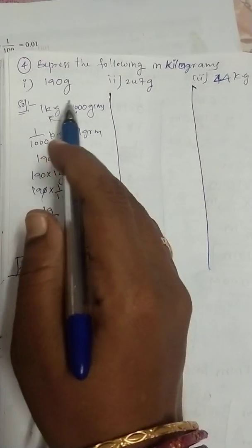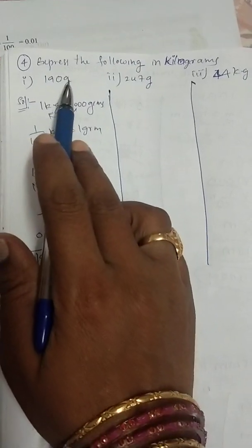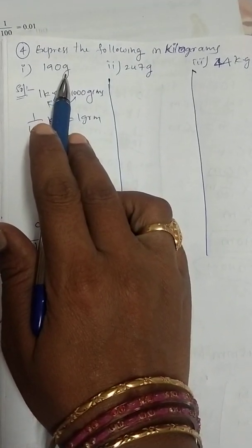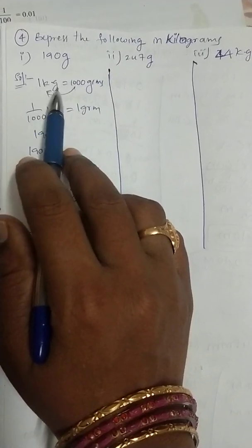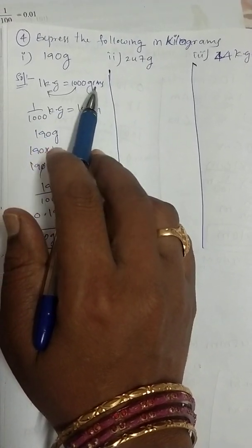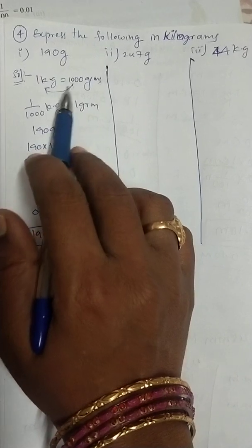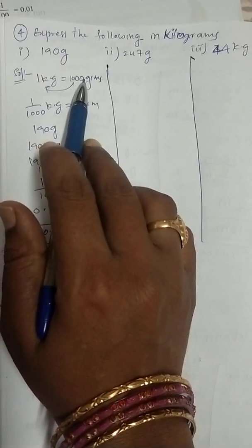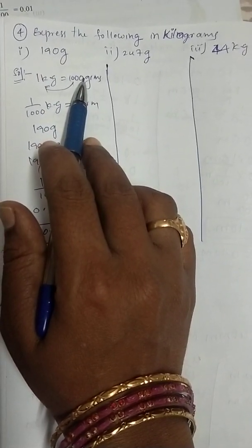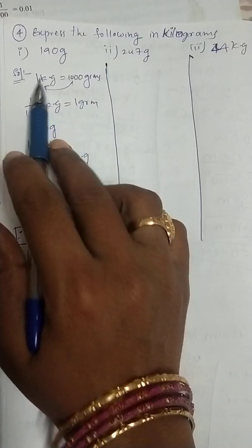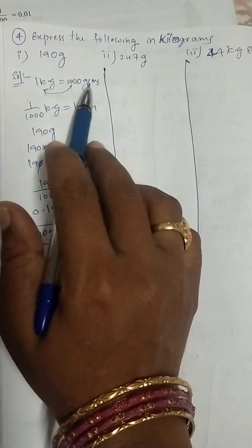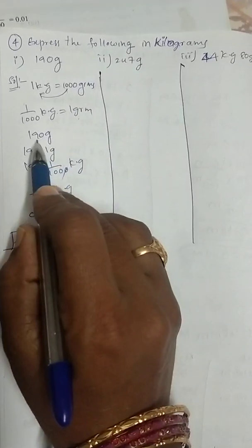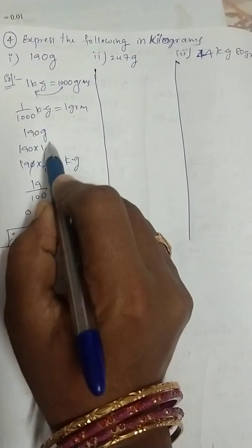First bit is given that 190 grams. We convert 190 grams into kilograms. First, we should know 1 kilogram is equal to 1000 grams. Now you can transpose. Here, multiplication. Any symbol out there means multiplication. Transpose of multiplication, division. 1 by 1000 kilograms is equal to 1 gram.